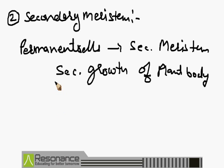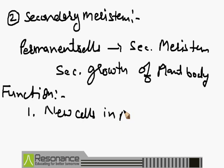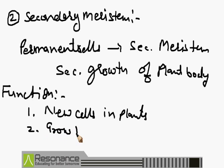What is the function of meristem in the plant body? In plants, the functions of meristem are: first, it is responsible for the formation of new cells in the plants. Second, it is responsible for the growth and development of the plant body.